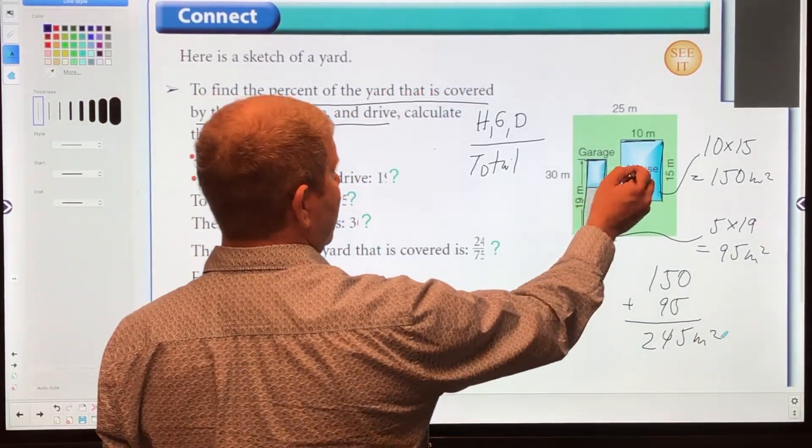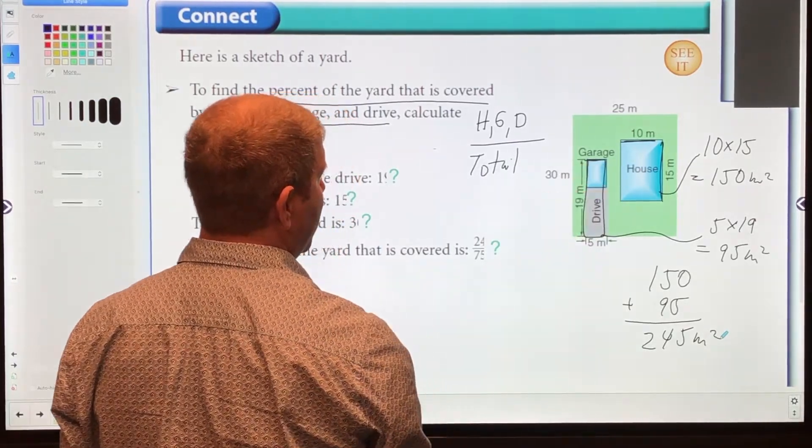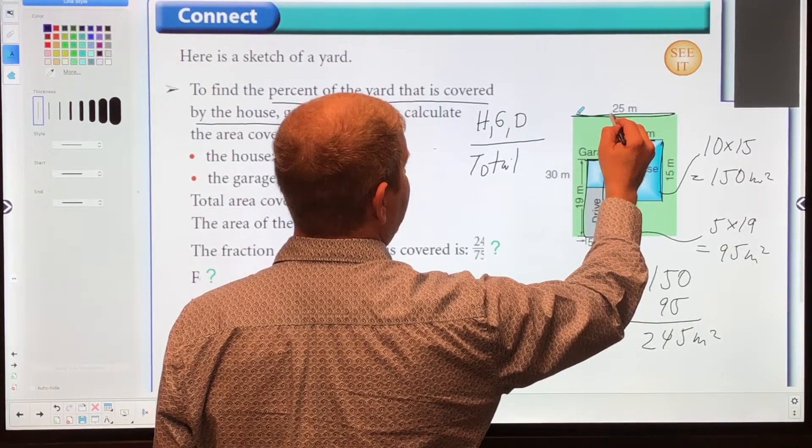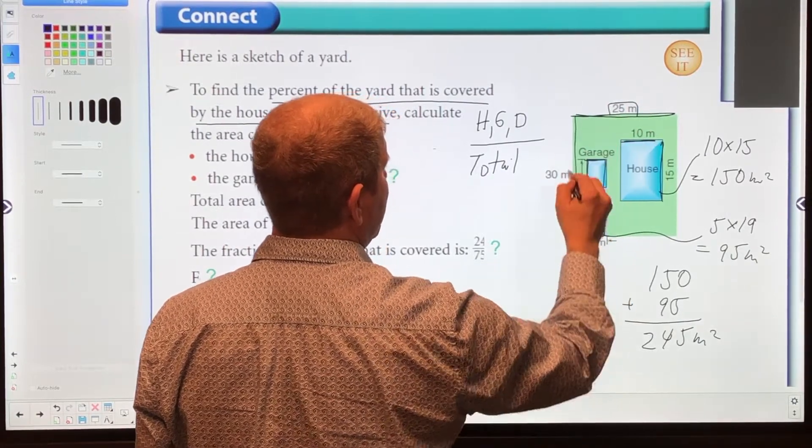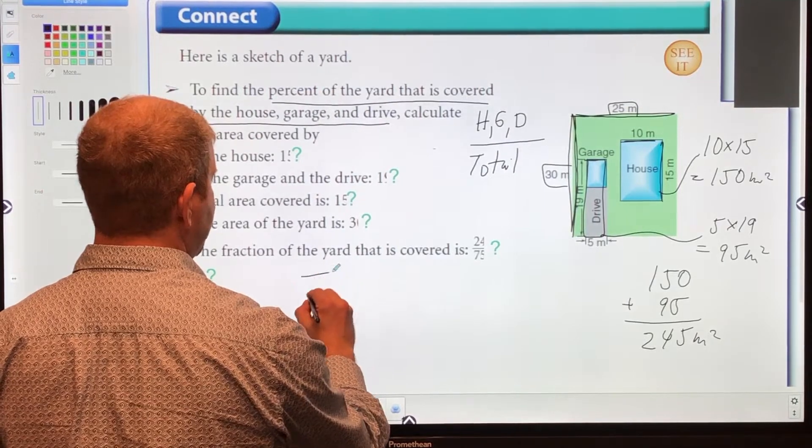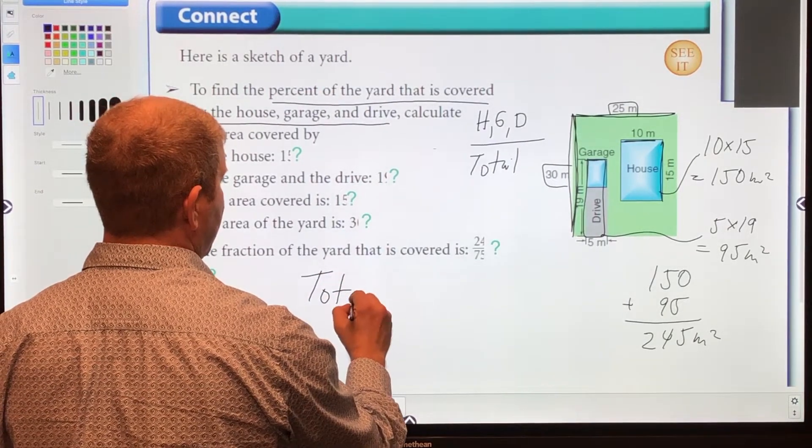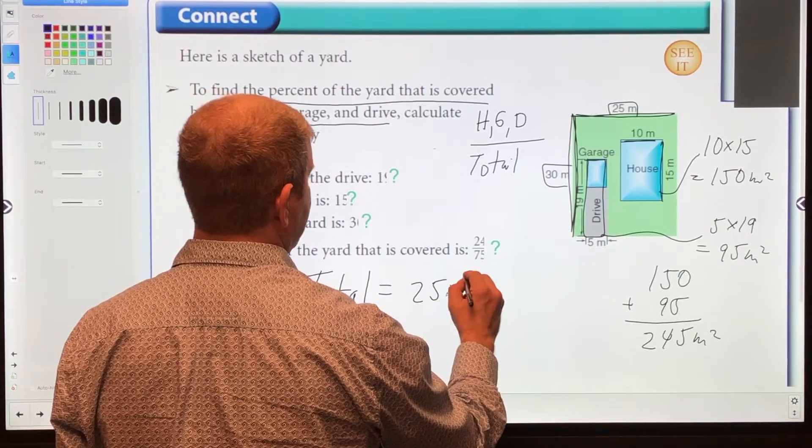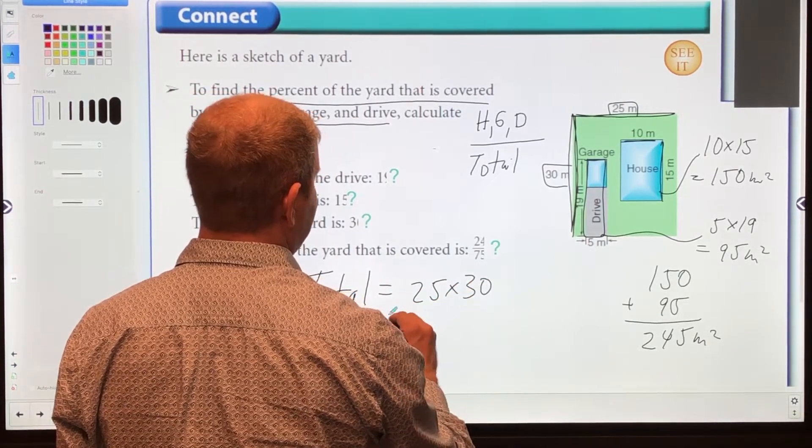What's our total? Well, our total is a rectangle that's 25 by 30 meters. So the total is 25 times 30, which equals 750 meters squared.